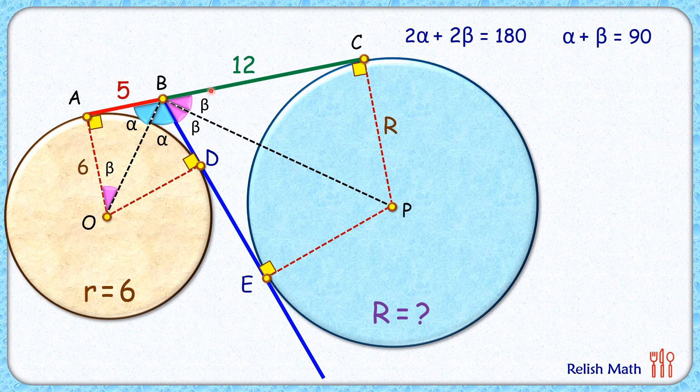Same way in this triangle BCP, this is beta and this left out angle will be alpha. Thus triangle OAB, this yellow triangle, will be similar to triangle BCP by angle-angle similarity.